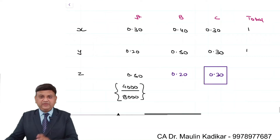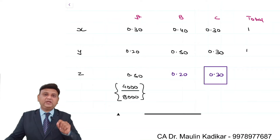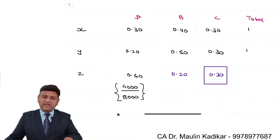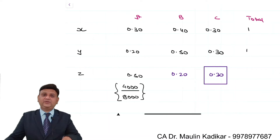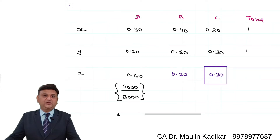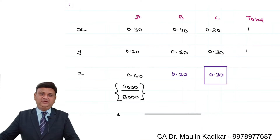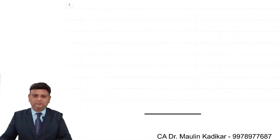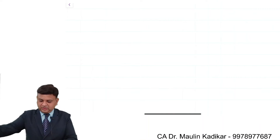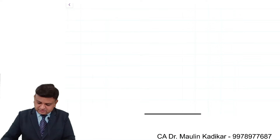Alternatively, one could form the equation for weight of C instead of weight of B — either approach is valid and acceptable. This completes the solution to the second part of the question.